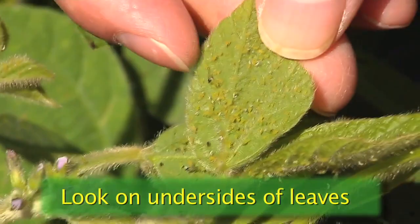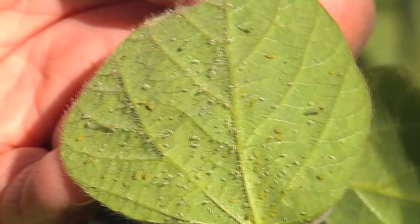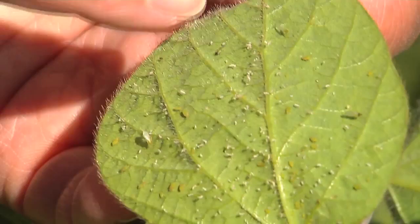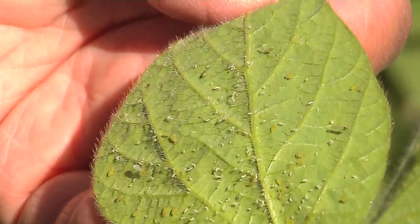When counting aphids, avoid counting the white cast skins of the aphids, and only count the yellow alive aphids for estimating your numbers.